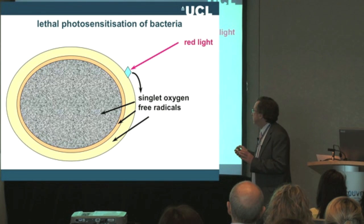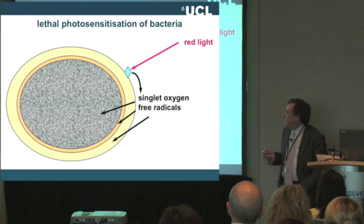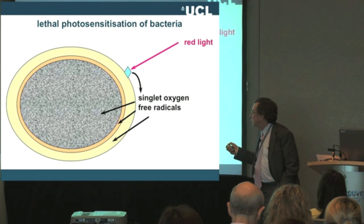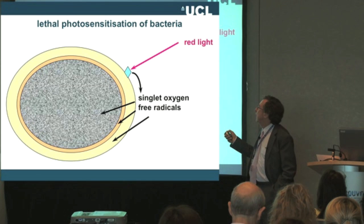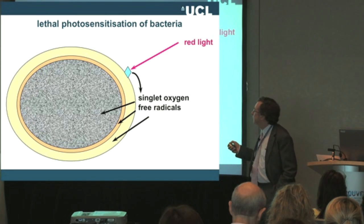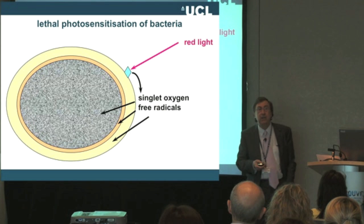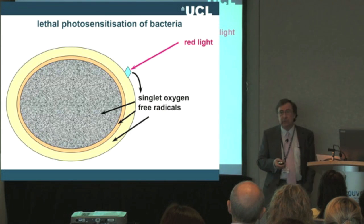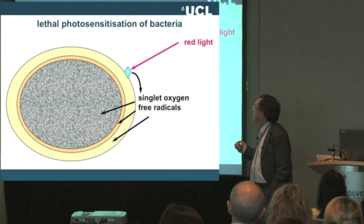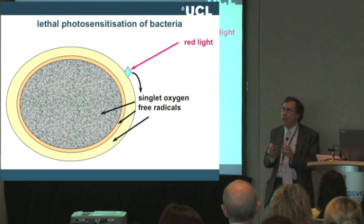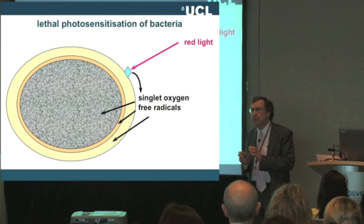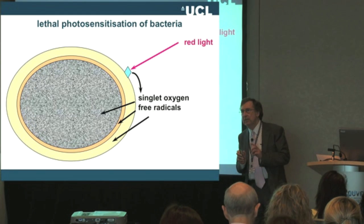This mechanism is very important — it shows that it's a non-specific mechanism. In other words, the singlet oxygen and free radicals are attacking the bacterial membrane, the bacterial cell wall, any proteins or capsules on the outside, and can penetrate through the cytoplasmic membrane to inactivate DNA or cell organelles within the microbe itself. So it's a blunderbuss approach with lots and lots of targets for these reactive species.